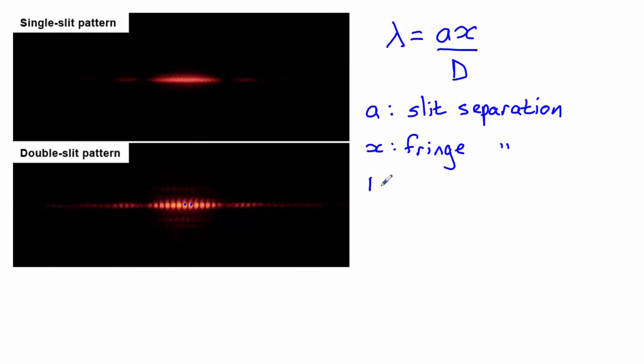Finally, D refers to the distance between the slits and the screen on which the interference pattern has been formed. That's usually around about one meter.